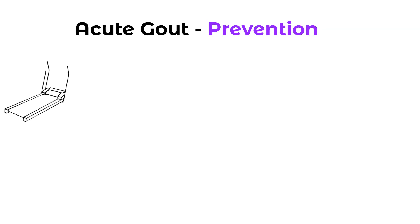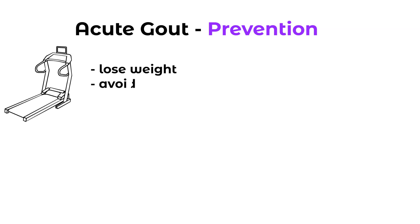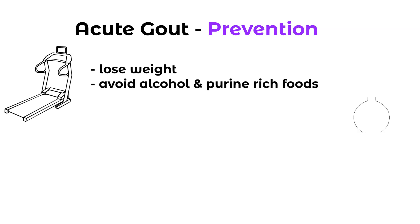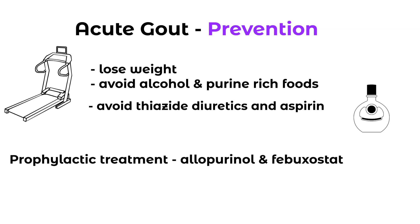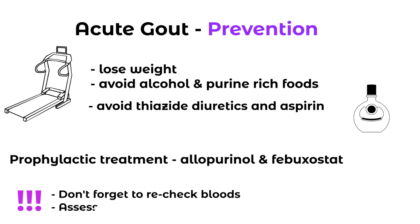Moving on to lifestyle and prevention of further attacks — that's very important. Lose weight, avoid alcohol and purine-rich foods such as red meats, pulses, and mussels. Avoid thiazide diuretics and aspirin. We can also consider prophylactic medication if there are recurrent attacks — first-line treatment is generally allopurinol, and we'll need to check blood tests again later to see if it has managed to lower uric acid levels or if we need to adjust the dose. If allopurinol is not effective or not tolerated, febuxostat is an alternative.